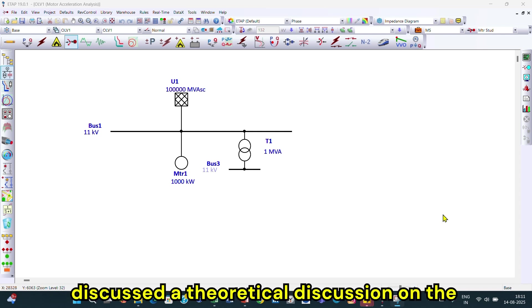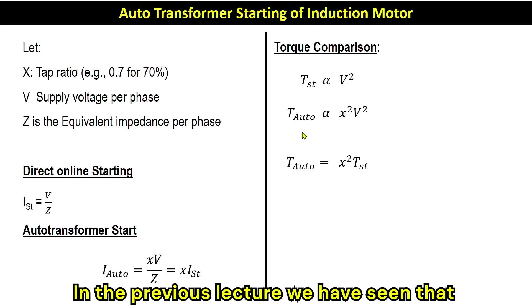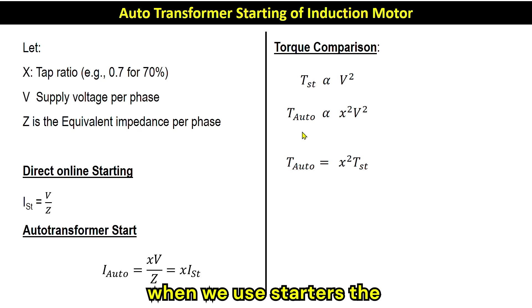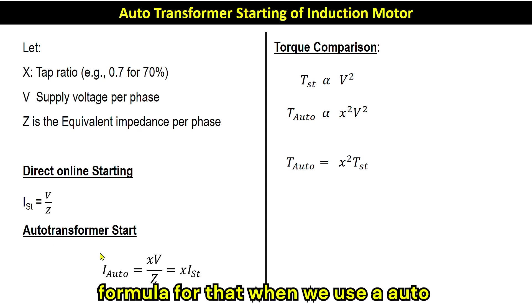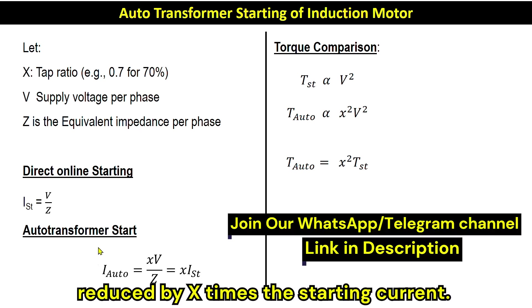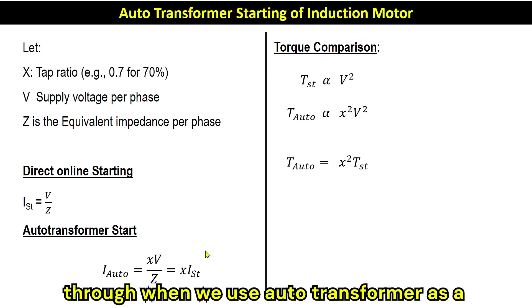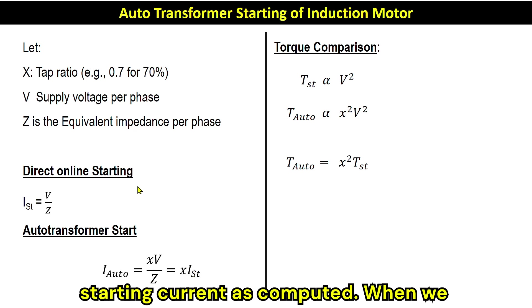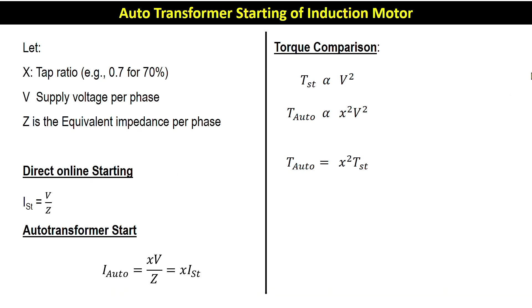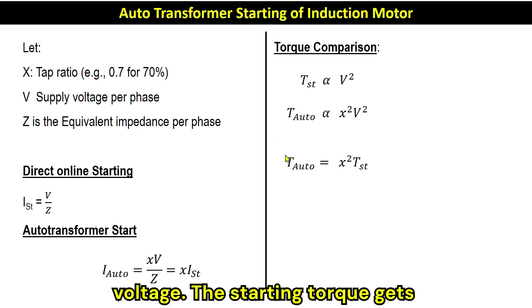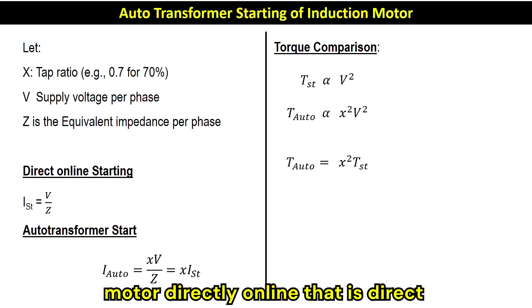In the previous lecture we discussed a theoretical discussion on starters — how they affect the starting current and starting torque. We saw that when we use starters, the current gets reduced as we apply reduced voltage through the starters. When using an auto transformer, the starting current gets reduced by x times. The starting torque gets reduced by x-squared times of the starting torque compared to direct online starting.